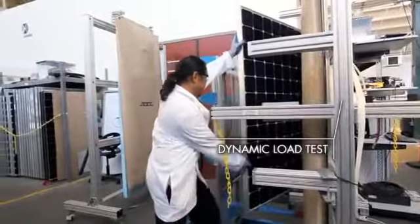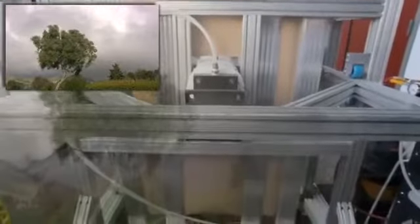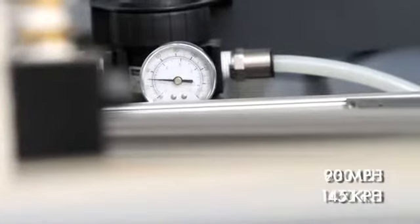This is the Dynamic Load Test, uniquely designed by SunPower to mimic real-world loads. Sure, it may not look like much, but this panel is enduring pressure equivalent to 90 mph winds, applied over and over. That's 880 pounds of weight applied again and again.